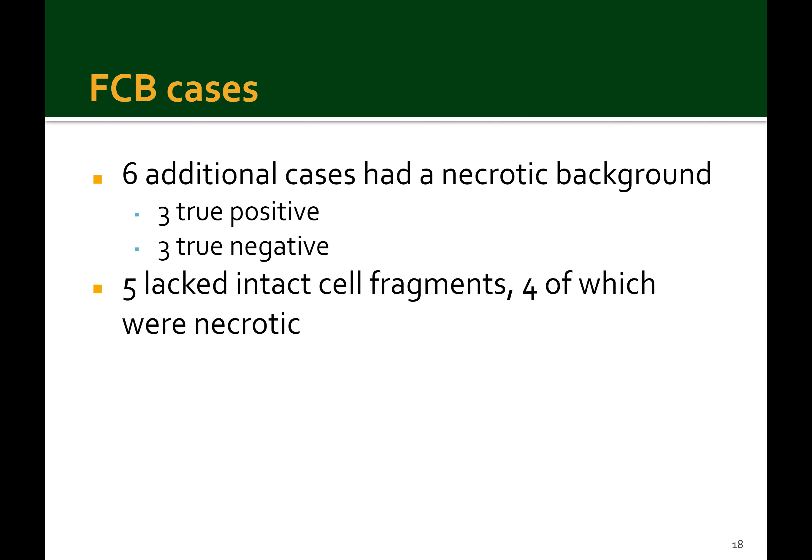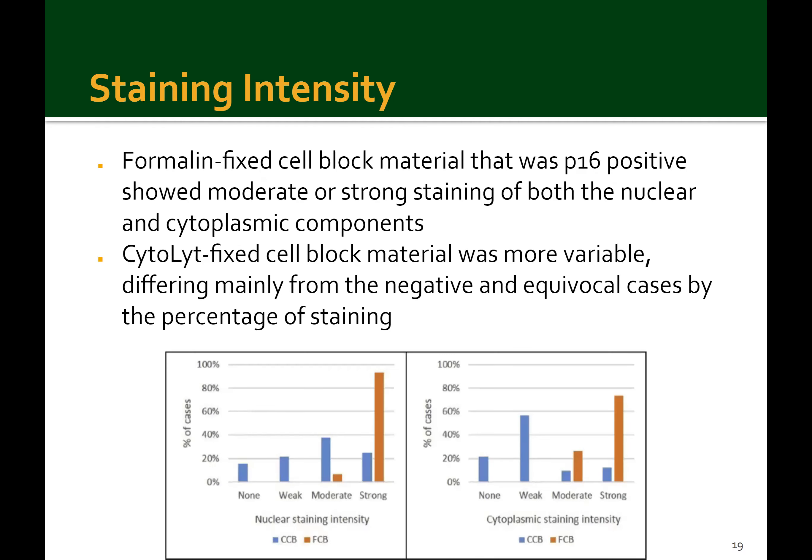To summarize additional findings in the formalin-fixed cell blocks: six cases had a necrotic background, three of which were true positive and three true negative. Five of these lacked intact cell fragments, and four of those were necrotic. Staining intensity was consistent for the formalin-fixed cell blocks, with P16 positive cases showing moderate or strong staining of both nuclear and cytoplasmic components. The cytolite-fixed material, on the other hand, was more variable, mainly differing for the negative and equivocal cases by the percentage of staining — illustrated in graphs where blue represents cytolite and orange represents formalin.